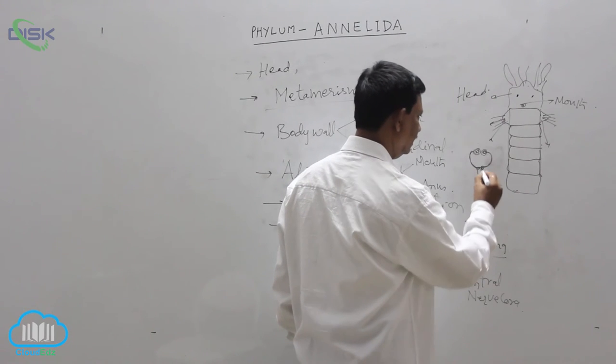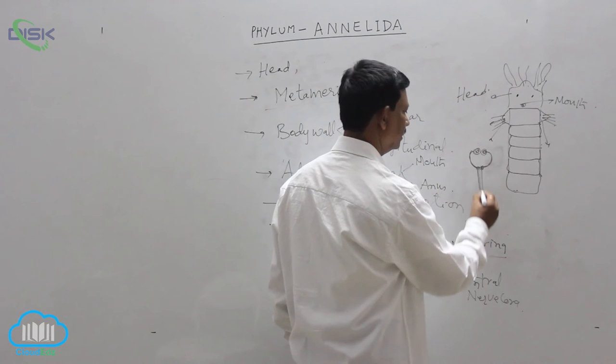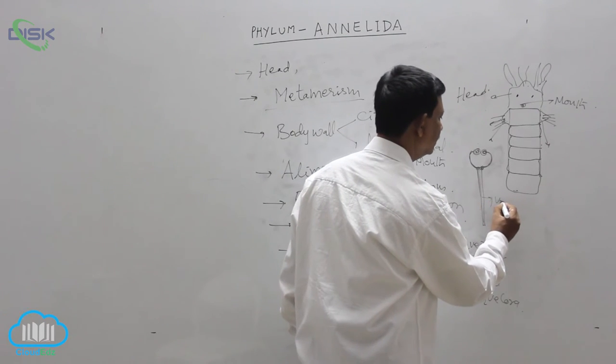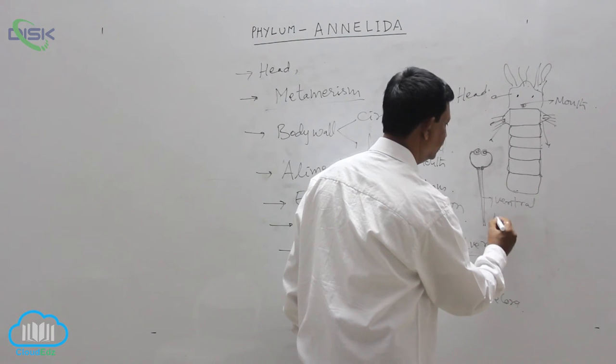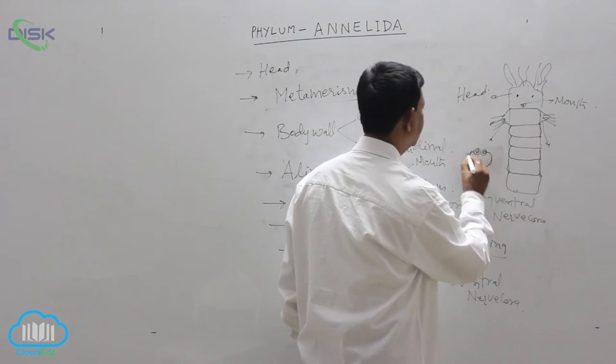Hence from the subesophageal ganglia, double nerve cord is arising on the ventral side of the body. This is known as the ventral nerve cord. This is nerve ring.